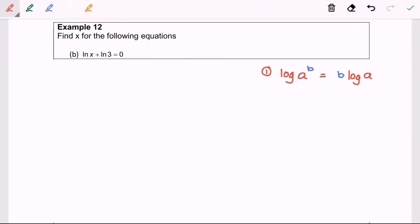So now I'm going to discuss example 12b: ln x plus ln 3 is equal to 0. First, what I'm going to do is rearrange. ln x equals negative ln 3.